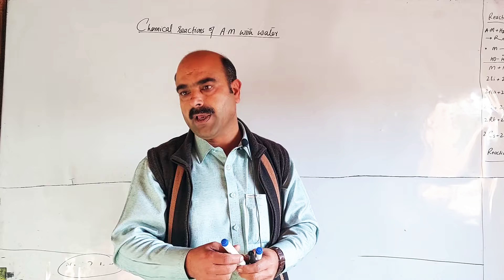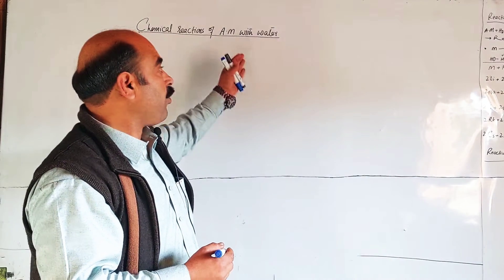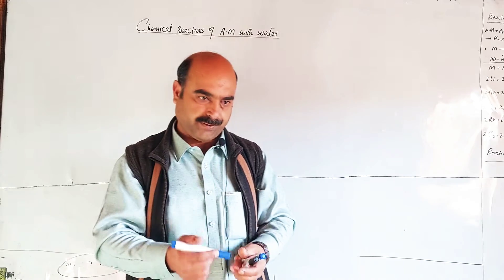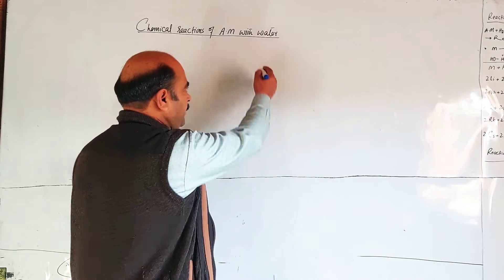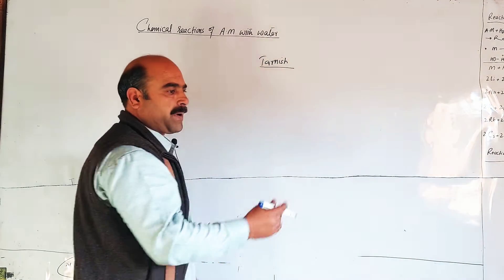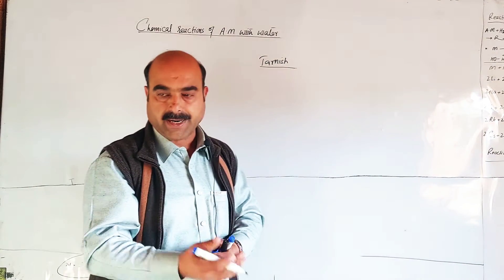The reactivity is high. When exposed to open air, alkali metals tarnish. Tarnish means the shiny color becomes dull.